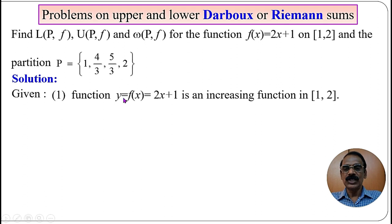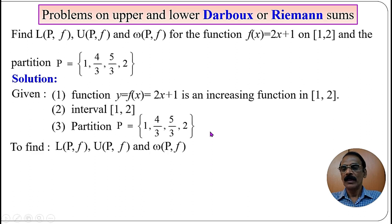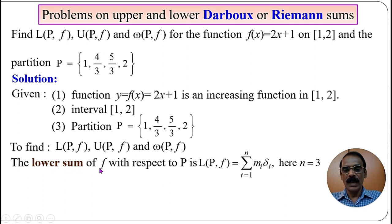We are given the function y = f(x) = 2x + 1. This is an increasing function on the closed interval [1, 2] with partition P consisting of the points 1, 4/3, 5/3, 2. The formula for the lower sum is L(P, f) = Σ(i=1 to n) mᵢ · δᵢ, where mᵢ is the infimum on the i-th sub-interval and δᵢ is the length of the i-th sub-interval.